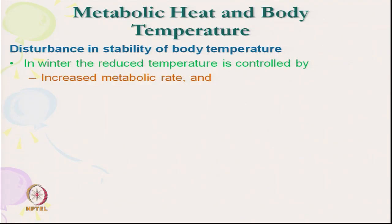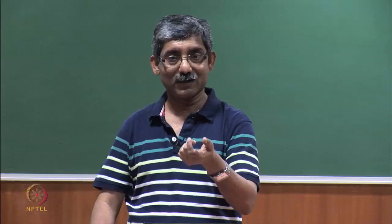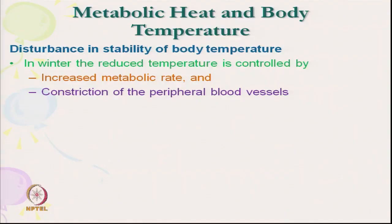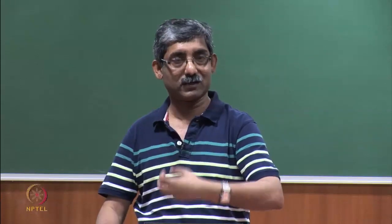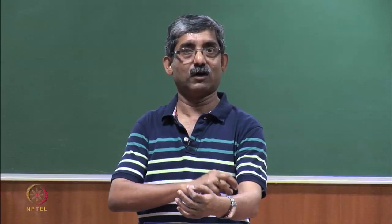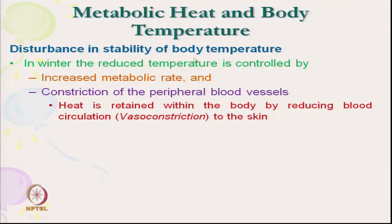The body physiology works at lower temperature when our body starts releasing heat to the environment. At that temperature, our metabolic rate increases automatically — that is why in winter our metabolic rate is more. Then vasoconstriction occurs: blood vessels get constricted, allowing less blood flow. This tries to retain body heat because blood flowing to the skin takes away body heat. So heat is retained within the body by reducing blood circulation.